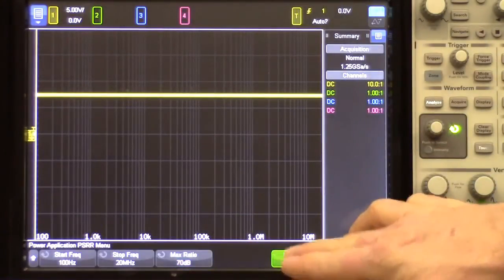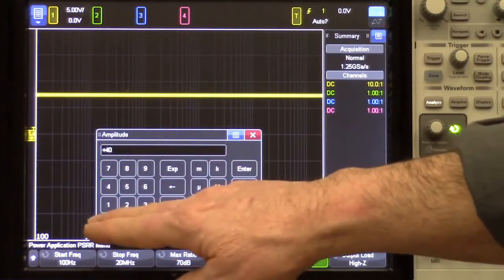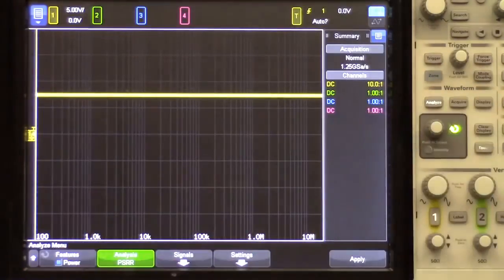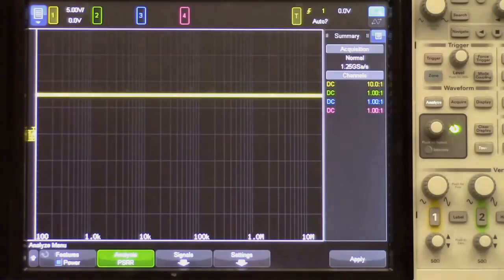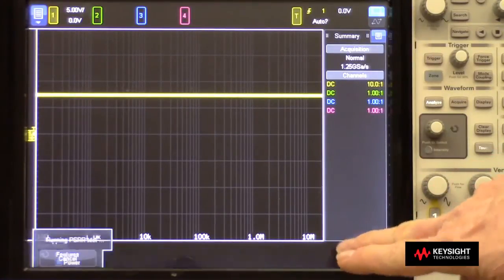And then we can set the amplitude of our test signal or our disturbance signal. In this case, I'm going to use 400 millivolts. To begin the power supply rejection ratio measurement, I simply press apply.